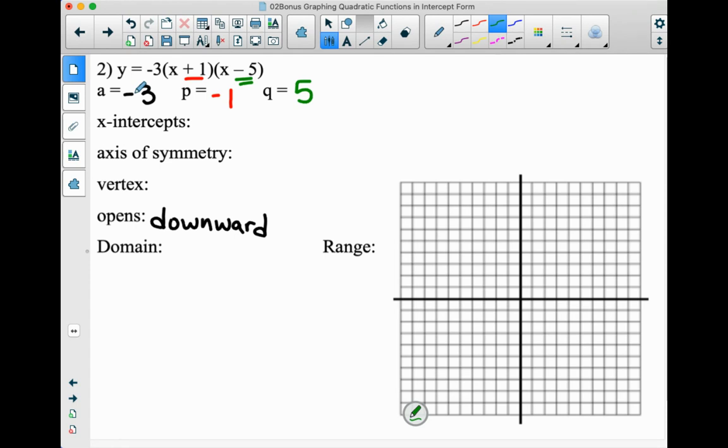The x-intercepts are negative 1 and positive 5. We get that from the P and Q. So we're going to put dots, negative 1 and positive 5.